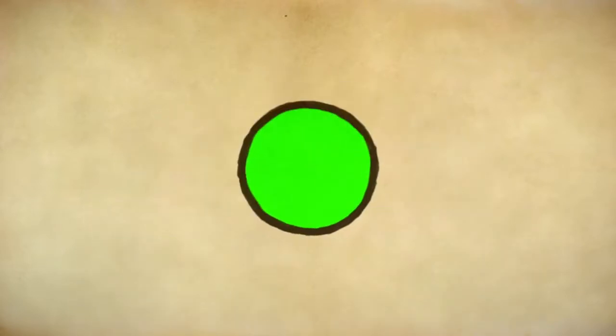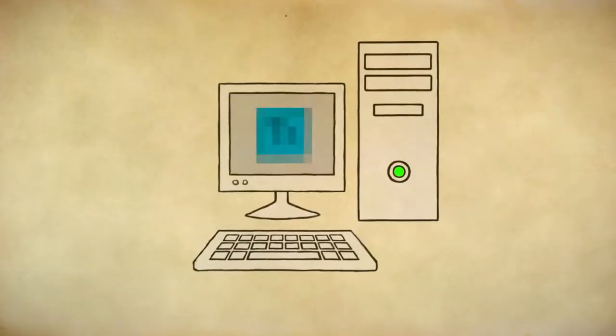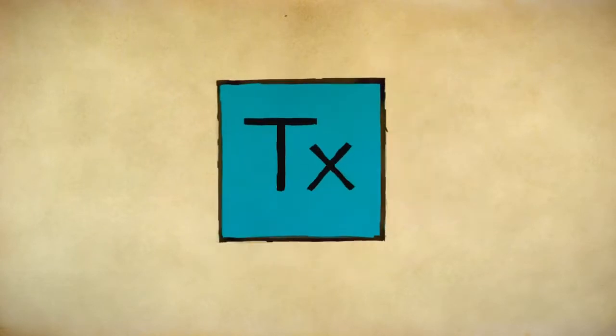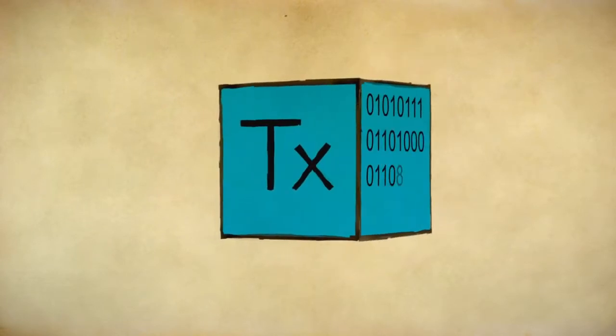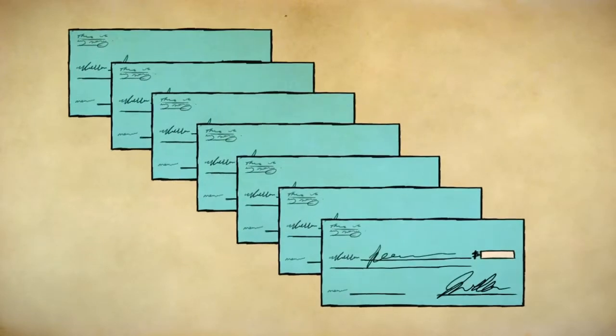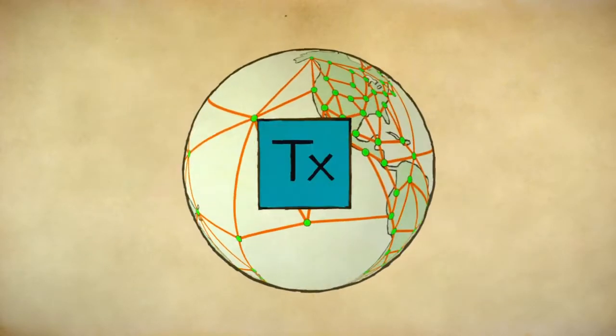Every node, even yours, validates the transaction and ensures it follows all the rules. Bitcoin has a built-in limit of one megabyte data per block, or seven transactions per second. The transaction then goes onto one blockchain.